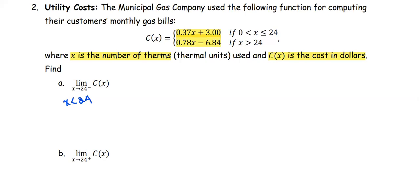When we look at the piecewise function, we're going to use the first piece, which is the cost equals 0.37x plus 3.